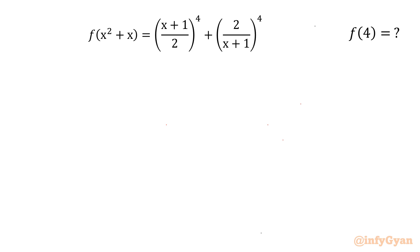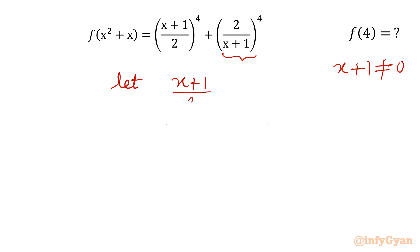Let's begin by noting that x plus 1 cannot be equal to 0. Now I will use substitution: let y equal (x+1)/2. So the right-hand side becomes y to the power 4 plus 1 over y to the power 4.